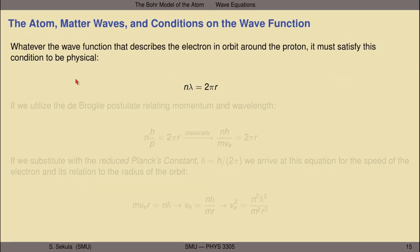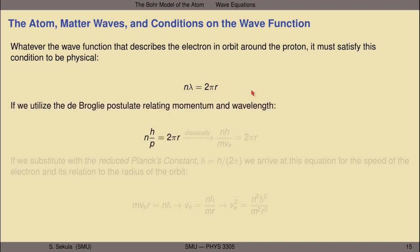Whatever the wave function that describes the electron in orbit around the proton, it must satisfy this condition in order to have physical meaning: an integer number n times some fundamental wavelength λ is going to equal 2πr. The only lambdas that will work will be those that satisfy this constraint — that is, 2πr over n equals λ. If we utilize the de Broglie postulate relating momentum and wavelength, we wind up with n times h over p equals 2πr. And classically, remembering that p equals mv, this puts a constraint between the radius, the speed, and the integer multiple n: nh over mv equals 2πr.